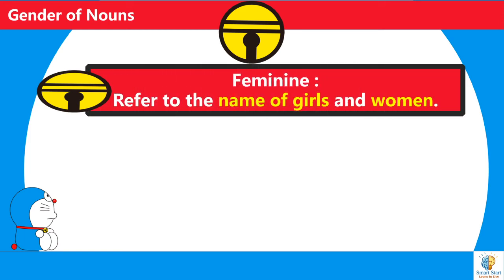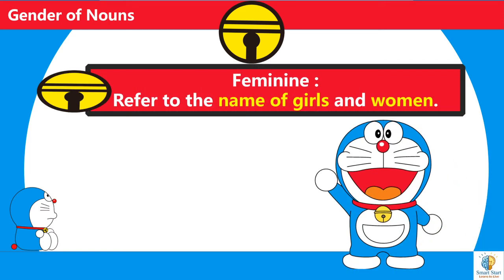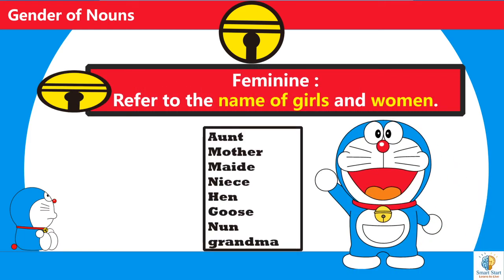Feminine refers to the name of girl and woman. For example: aunt, mother, maid, niece, hen, goose, nun, and grandma.